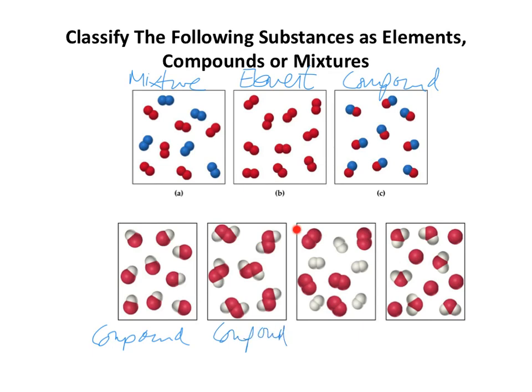Box three: we've got a red atom bonded to a red atom, but we've also got two white atoms bonded together. So this, very much like example A, is a mixture — specifically a mixture of elements.